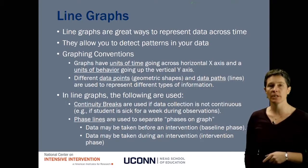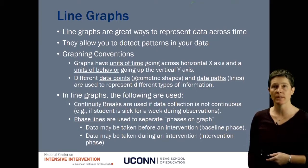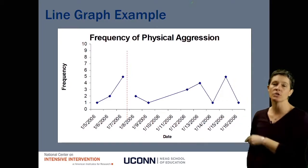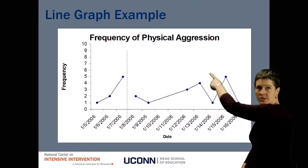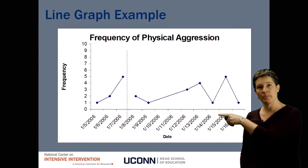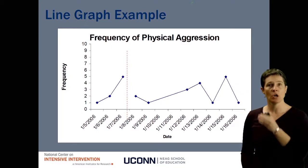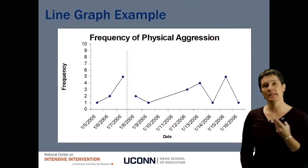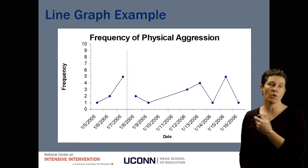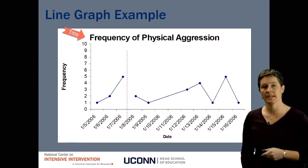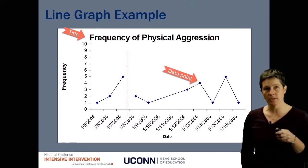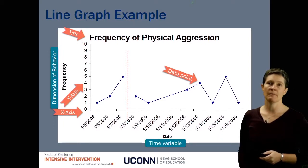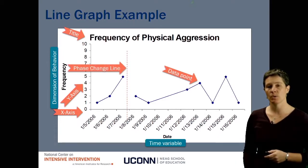Line graphs are a great way to summarize information across time and help you see patterns quickly and easily. Generally, they have the unit of time going across the bottom and the frequency, rate, or percent of intervals going up the y-axis. You can draw a dashed phase line down the middle to show when an intervention happened — comparing baseline behavior before the intervention to behavior after. Add a title so you know what's being measured, connect data points with lines to show continuous data, and place the dimension of behavior on the y-axis and the time variable on the x-axis.